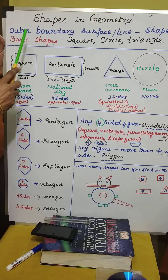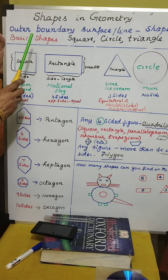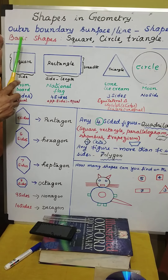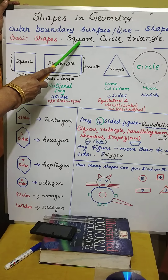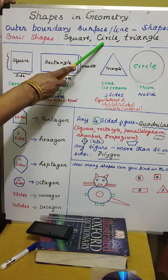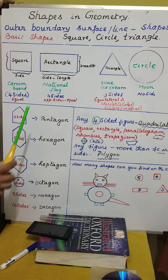Some basic shapes are there. What are they? They are square, circle, triangle.